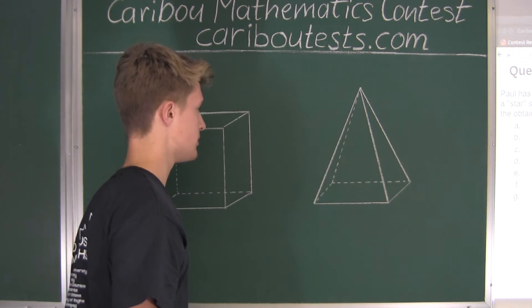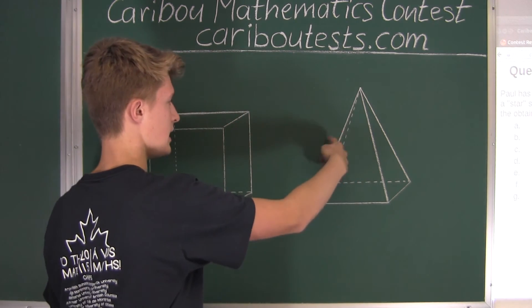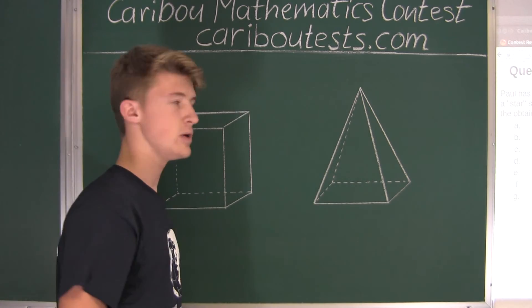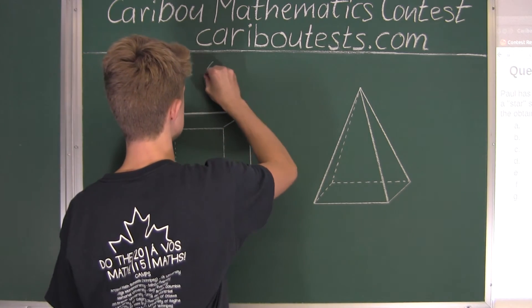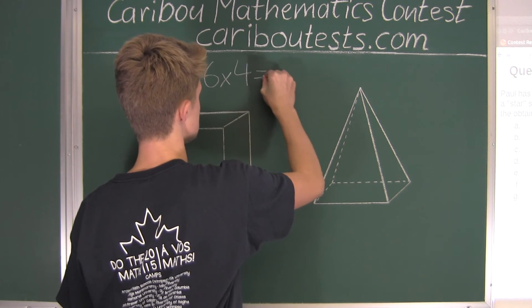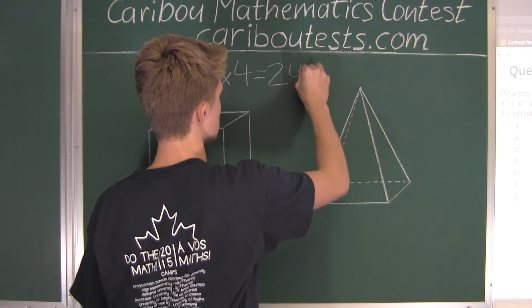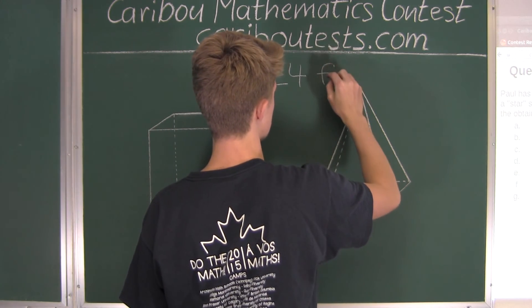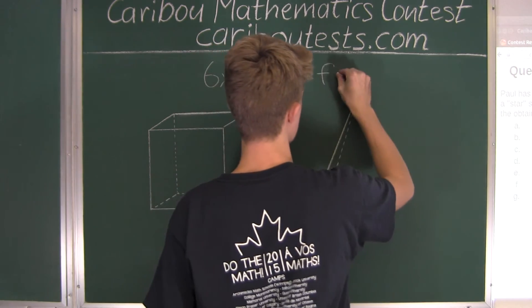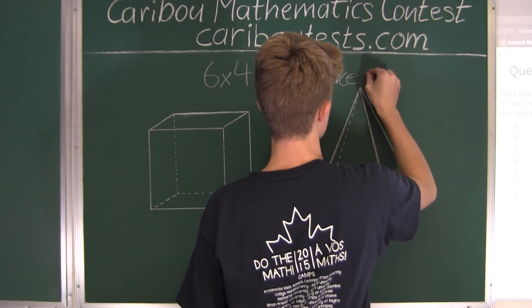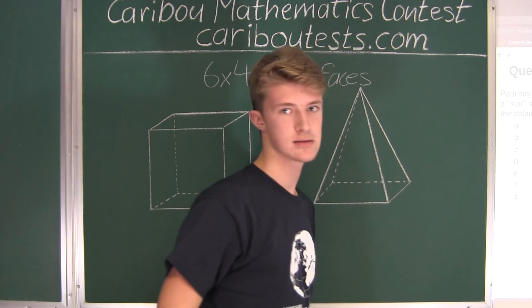Therefore, if we know we have six pyramids and four outer faces, we must have six times four, which is equal to 24 faces for the obtained star.